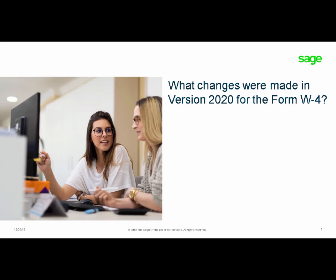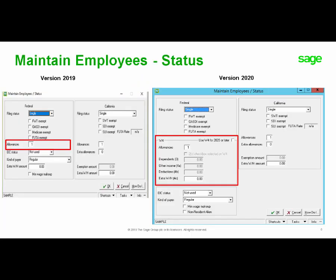What changes were made in Sage BusinessWorks version 2020 for the Form W-4? Looking at the screen on the left is the current version 2019. You'll notice there is an allowance field to enter the number of allowances or dependents the employee selected on their W-4. In version 2020, we continue to have allowances for existing employees not making any changes to their withholding status for 2020.